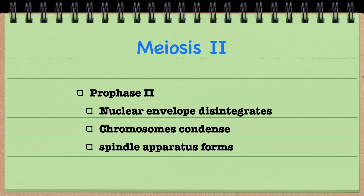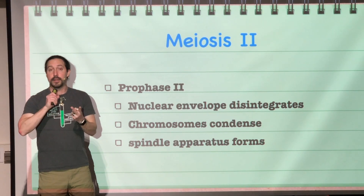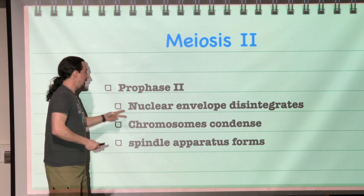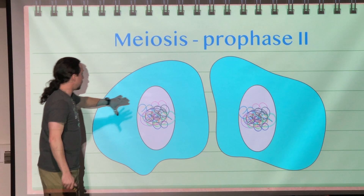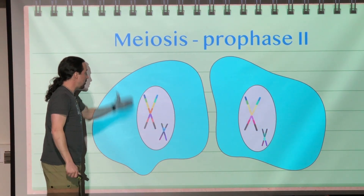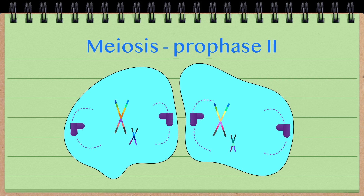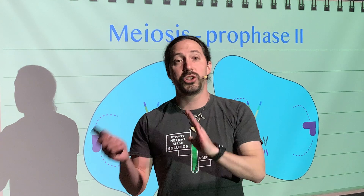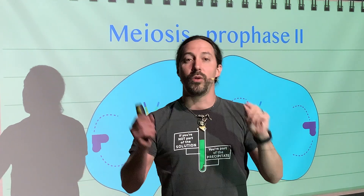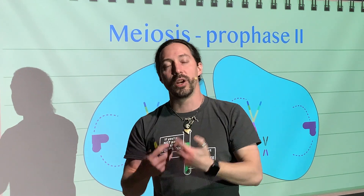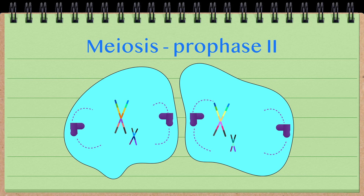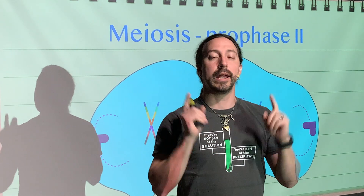Prophase II: the nuclear envelope is going to disintegrate again, the chromosomes are going to condense, and our spindle apparatus is going to form. We're going to recondense our chromosomes, get rid of our nuclei, and reform the spindle apparatus. Meiosis II looks very similar to mitosis because we are now just separating out sister chromatids — we no longer have homologous chromosomes to separate out, and we are following steps very similar to what occurs in mitosis.